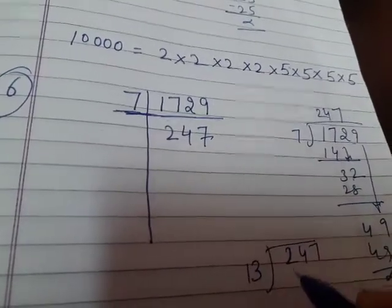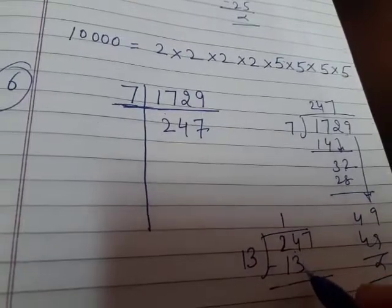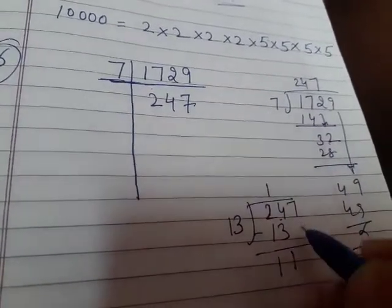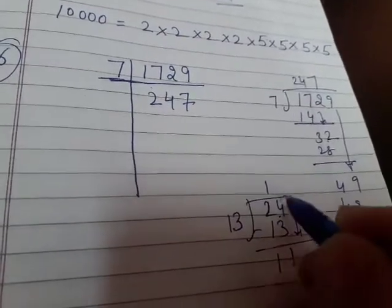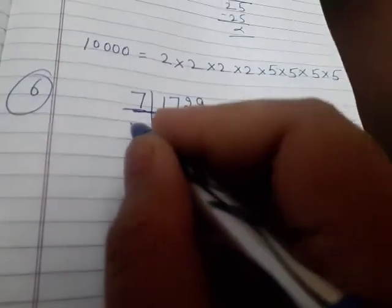Bring down the 7. 13×9=117, so it is divisible by 13. 247÷13=19.